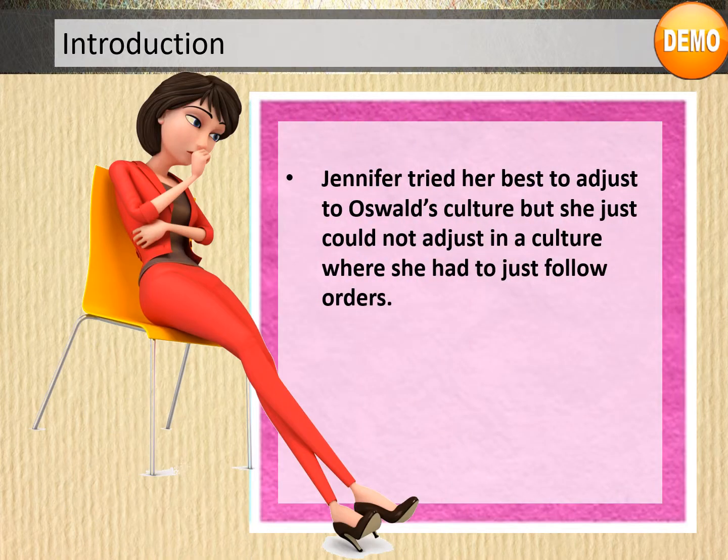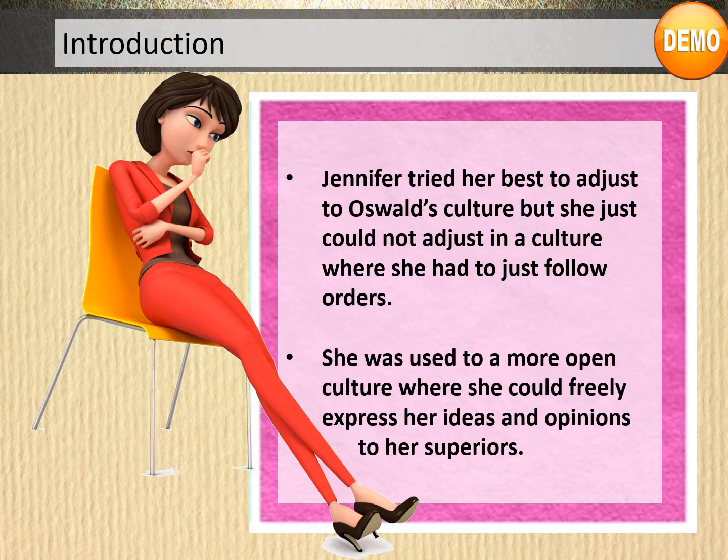Jennifer tried her best to adjust to Oswald's culture, but she just could not adjust in a culture where she had to simply follow orders. She was used to a more open culture where she could freely express her ideas and opinions to her superiors.